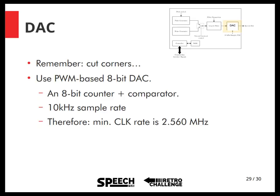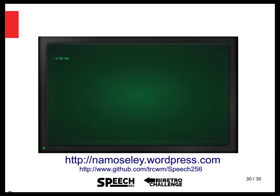For the implementation of the digital-to-analog converter, we have an 8-bit counter and a comparator. We want a 10 kHz sample rate, and in order to achieve this we have to clock it at approximately 2.5 MHz. Check out the blog at namoseley.wordpress.com, or if you want to see the code — which I'll try to keep updated during the retro challenge — go to GitHub. My username is trcwm and it's slash speech256. Thanks to John Linville for running the retro challenge contest.